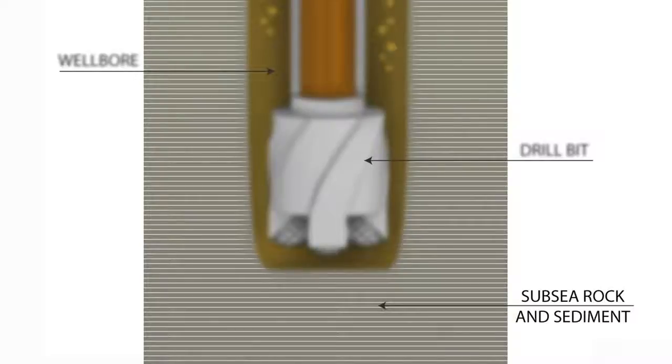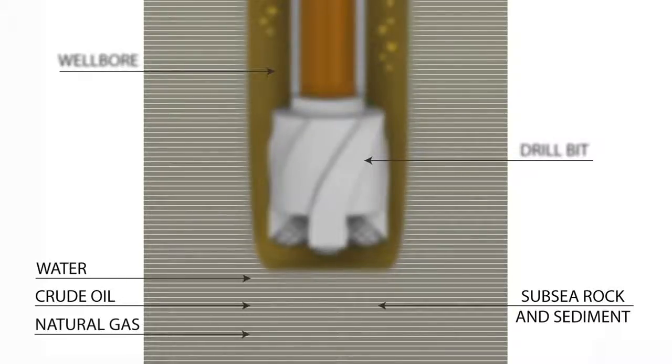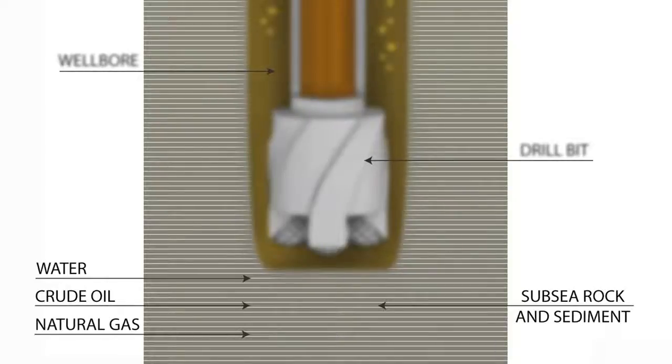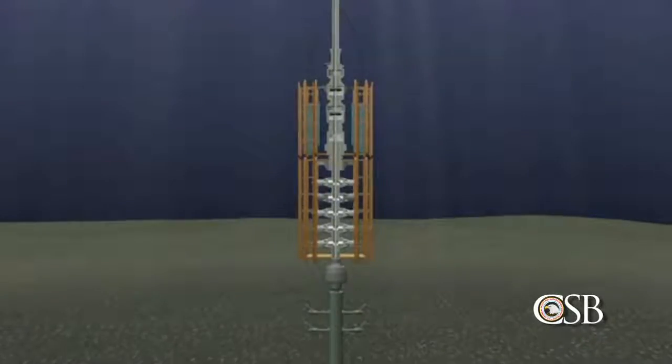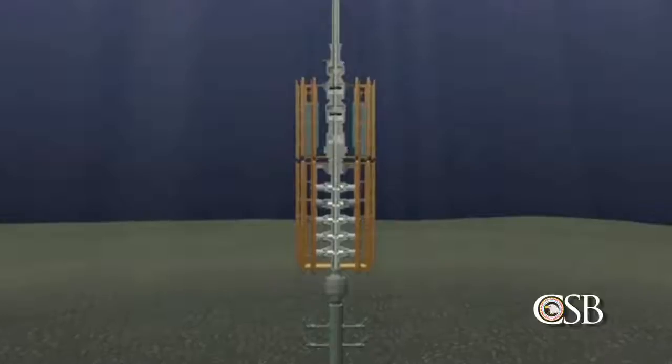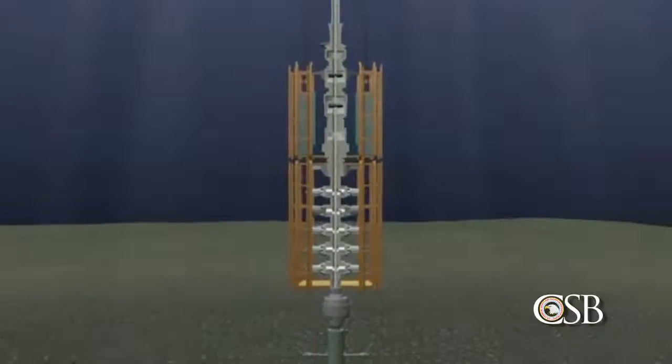These rocky layers can contain trapped water, crude oil, and natural gas under pressure. An unplanned flow of these well fluids into the wellbore, known in the industry as a kick, can be dangerous.